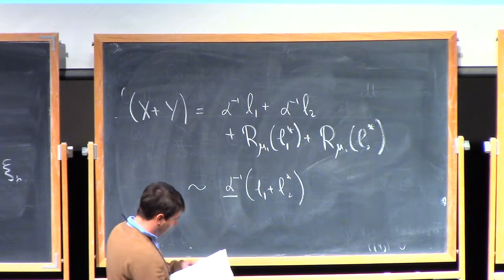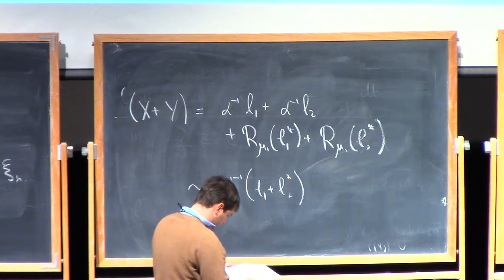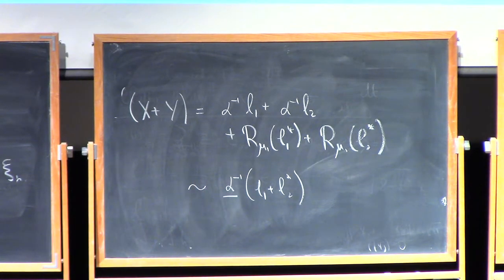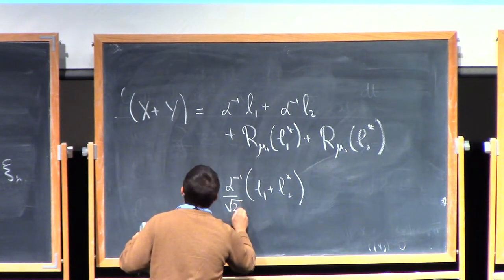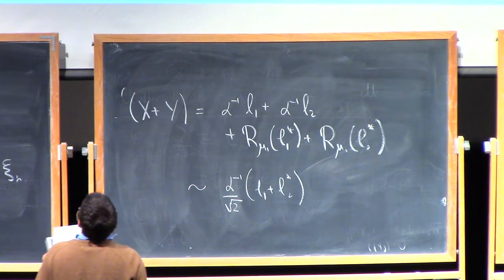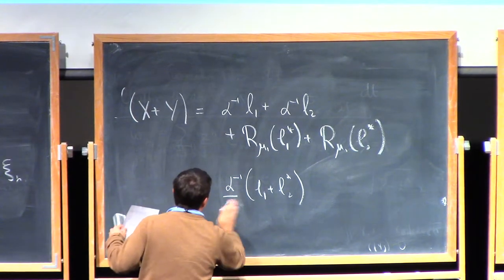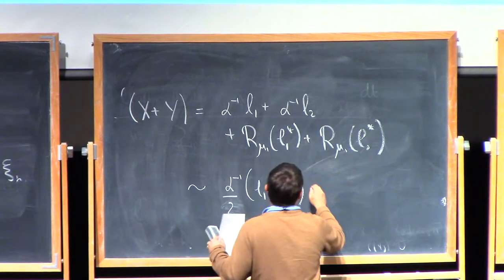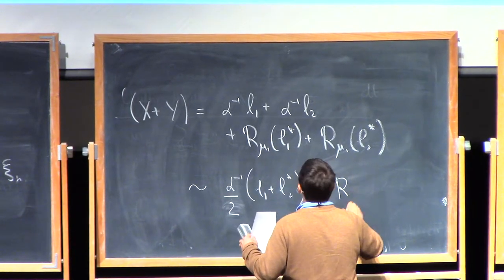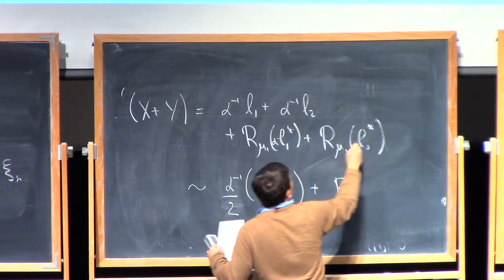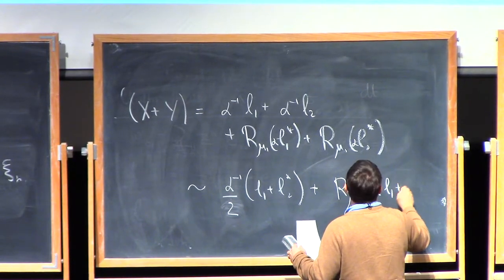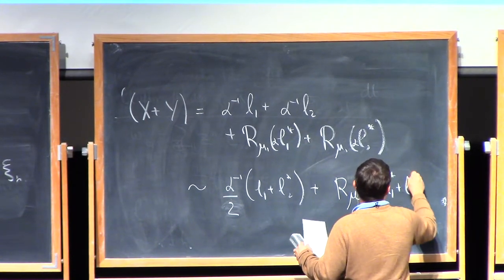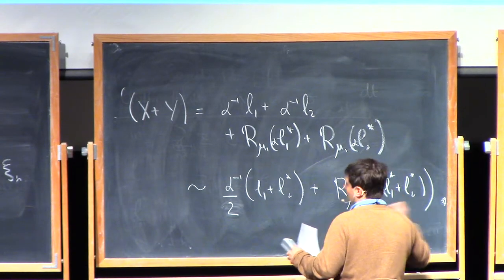Sorry, I'm missing something. Yeah, that's on the next page. Square root of 2 here. Oh, I divided by 2 here. Yes, sorry. By 2 here, and then here what I will do is r mu, I was missing alpha, sorry, of alpha L1 plus L2 star. Okay?